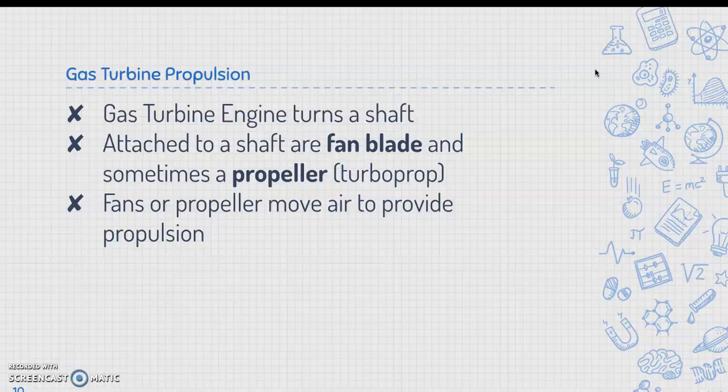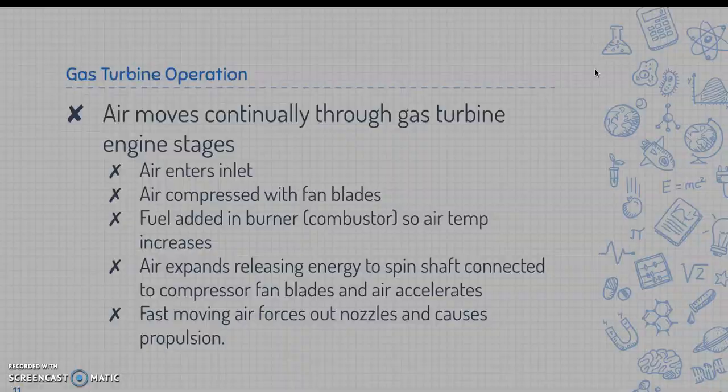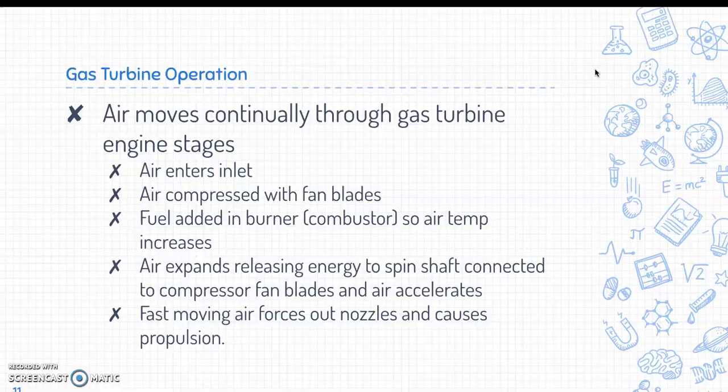In gas turbine propulsion, the gas engine turns a shaft attached to a fan blade and sometimes a propeller, as in turboprops. Fans or propellers move the air to provide propulsion. Air moves continually through the stages: air enters the inlet, is compressed with fan blades, fuel is added in the burner or combustor so air temperature increases, then the air expands, releasing energy to spin the shaft connected to the compressor fan blades.